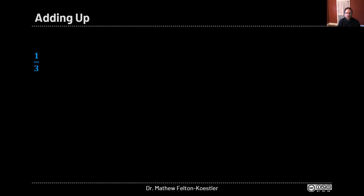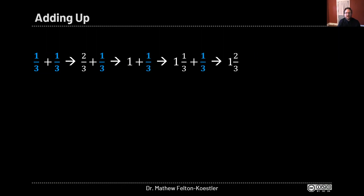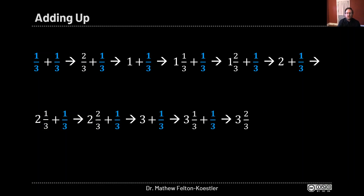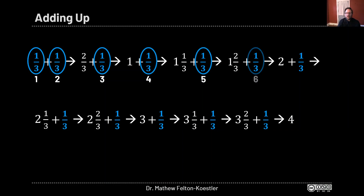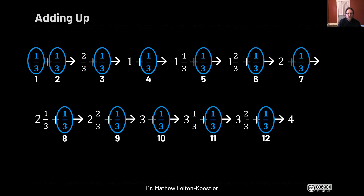Instead, maybe you added your laps as you went. You might have thought: well, my first lap would be one-third of a mile, and then if I do another lap, that'll be two-thirds of a mile, and another lap will be one whole mile. Then you kept going like that until you got all the way up to four miles, which was your goal. Then, to figure out how many laps it was, you could have counted all the thirds you added to find out that it took twelve laps.